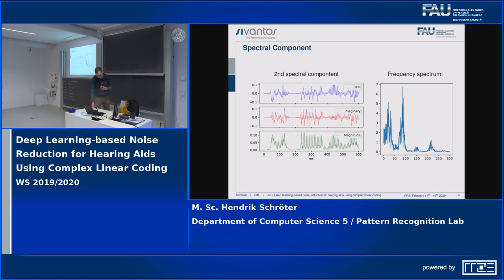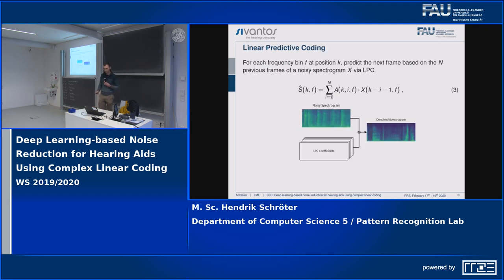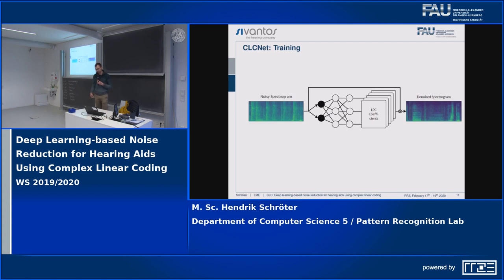So we want to use linear predictive coding — essentially the same formula, but for each frequency bin f — basically doing linear predictive coding in each band. To do this, we can use a neural network to predict those LPC coefficients at inference time. The goal is to get a denoised, speech-enhanced spectrogram as output.